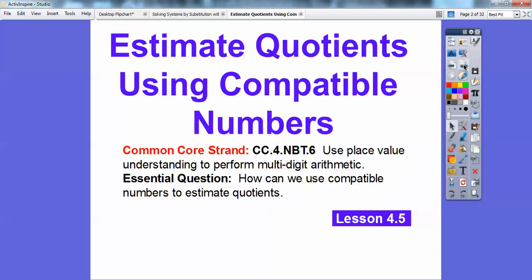We're going to be given some big numbers, and we'll use some compatible numbers to estimate these. So how can we use compatible numbers to estimate quotients?